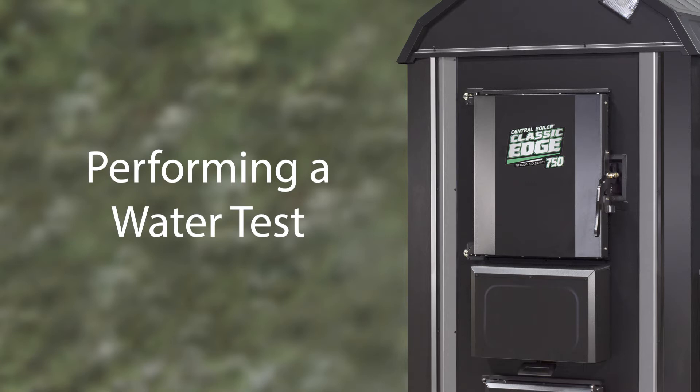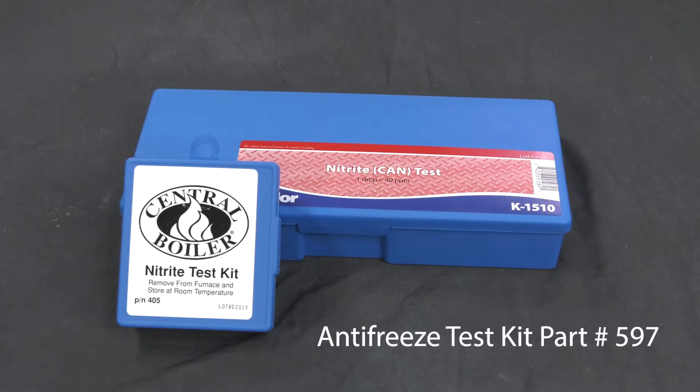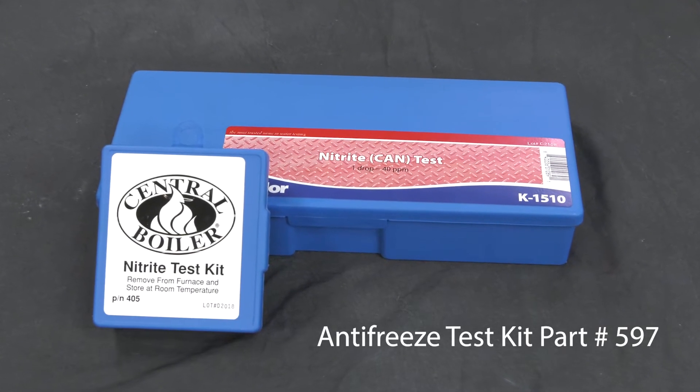In this video, we will demonstrate how to use the test kit that comes with your furnace to test water for pH and nitrites. If antifreeze has been added to the system, use test kit part number 597.